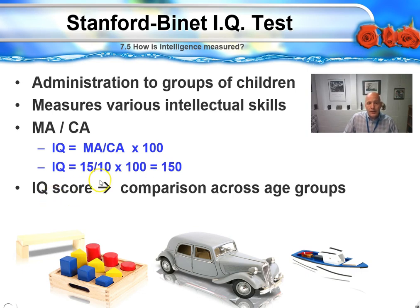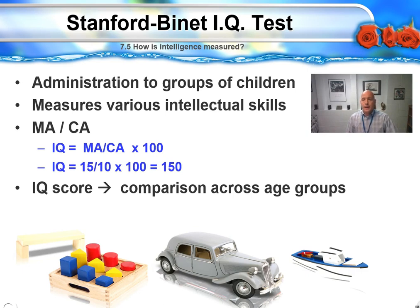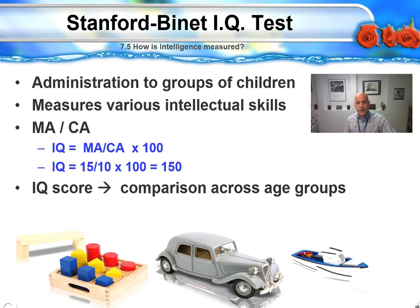We can compare. If you have a ten-year-old who is getting all the ten-year-old items correct, and also getting the 11th, 12th, and 13-year-old items correct — let's say he tops out at 15 — then we have a ten-year-old with a mental age of 15. We divide 10 into 15 and get 1.5. Multiply 1.5 times a hundred, you get 150.